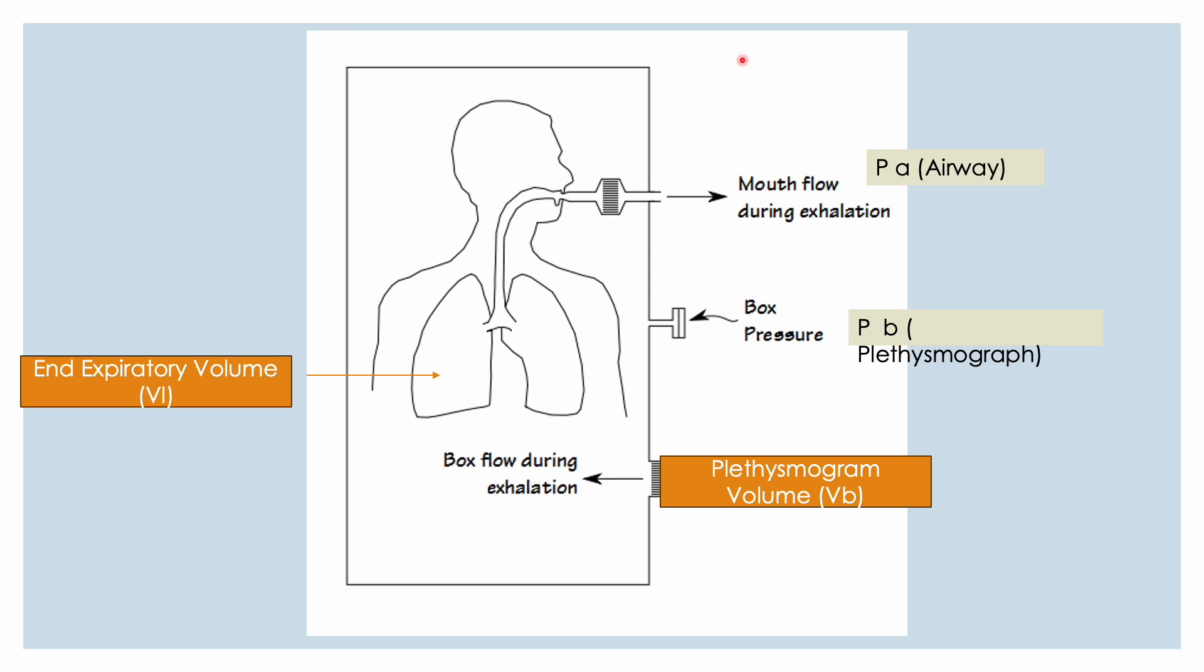And with three to five satisfactory panting maneuvers, once they are recorded, then the shutter again is opened. And when the shutter is opened the patient will perform an ERV or expiratory reserve volume maneuver.